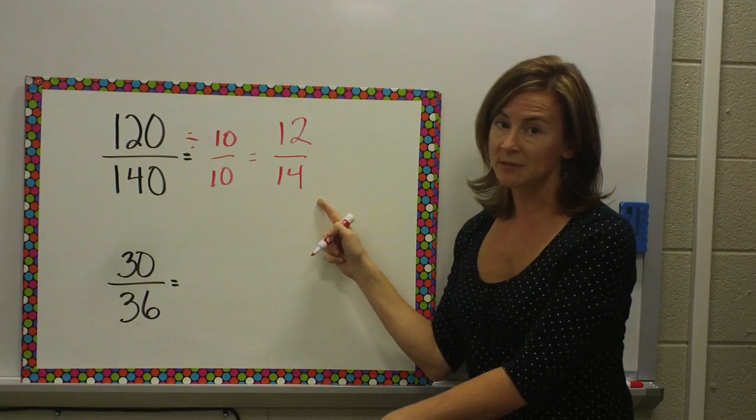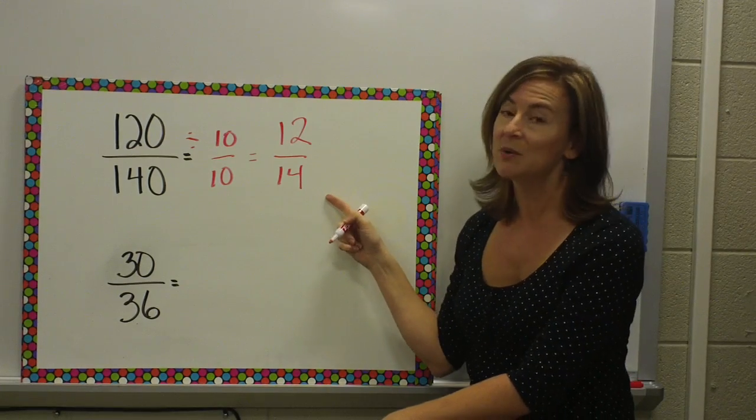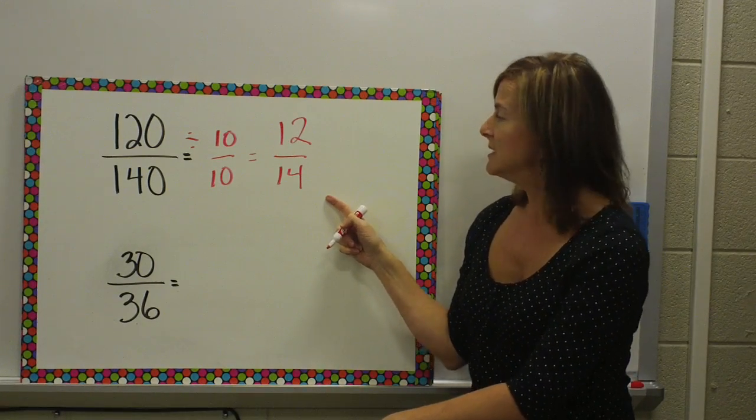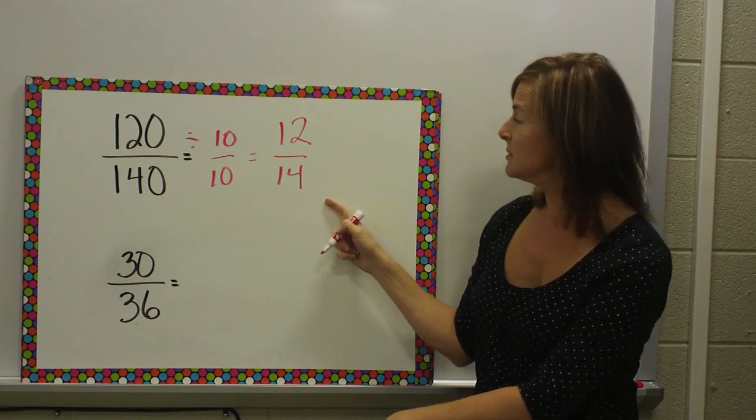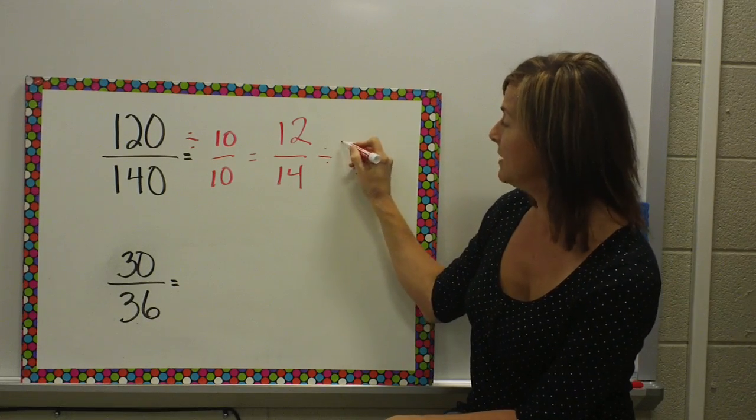That leaves me with 12 over 14. Now, I want to make sure this is in simplest form. Both of them are even, so I know I can keep going. Since they're both even, my divisibility rule said, hey, you can divide those by 2.